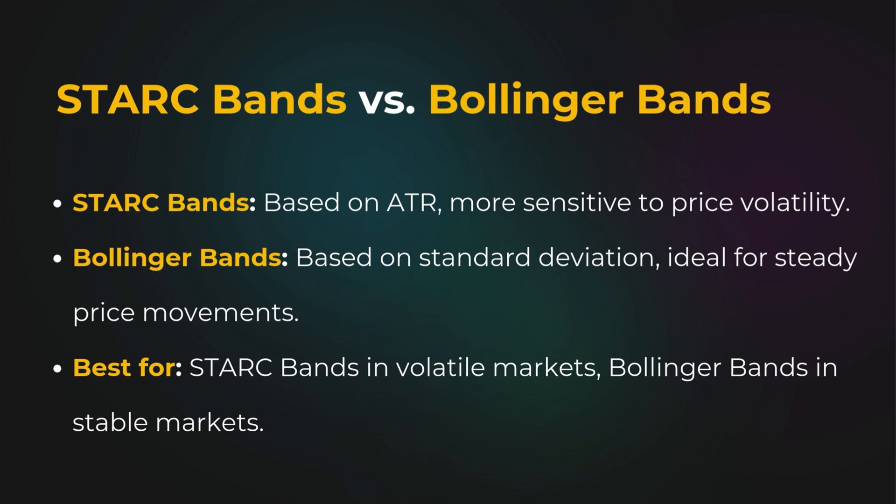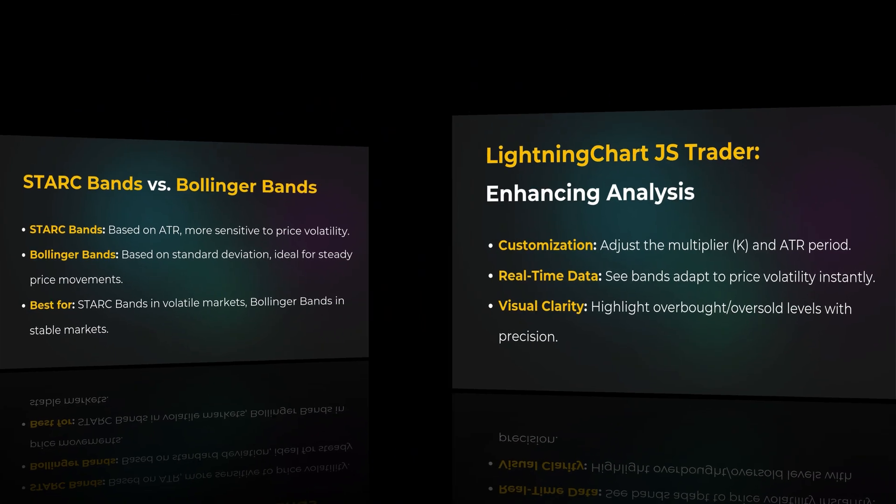STARK bands adjust to market volatility using the average true range, making them ideal for fast-moving markets. In contrast, Bollinger Bands are better suited for trending or stable markets.